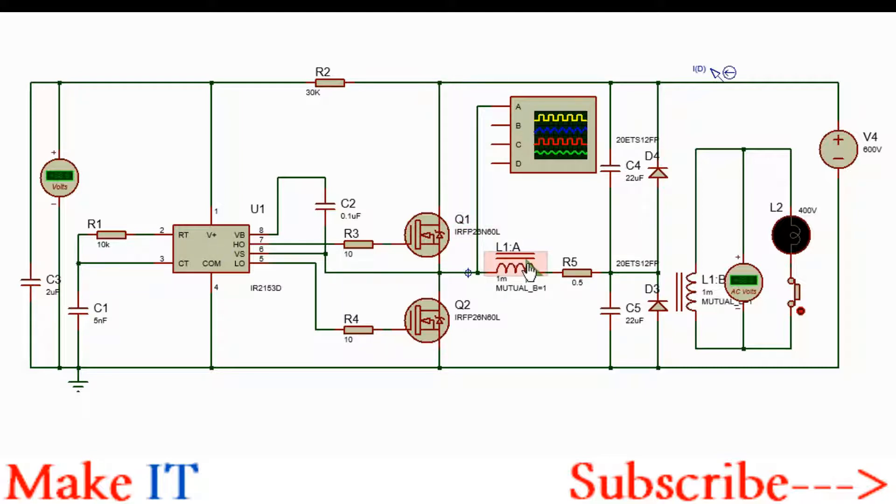Current will flow from the positive rail through Q1, through the primary side of the transformer, and through this output capacitor C5 into ground, since capacitors allow AC voltage and current to flow through. When pin 7 turns low and pin 5 turns high, Q1 will turn off but Q2 will conduct.